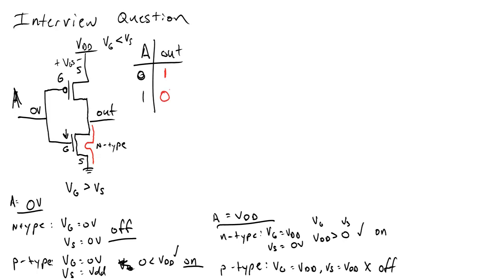So, can we, based on this table here, can we figure out what kind of gate this is? We have an input of zero, we get a one out. We have an input of one, we get a zero out. What kind of gate is that? Right. It's an inverting gate.